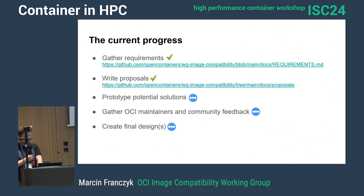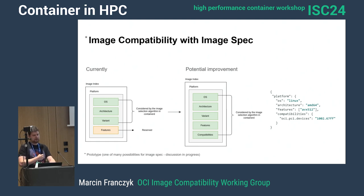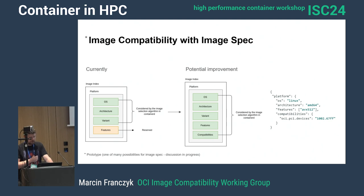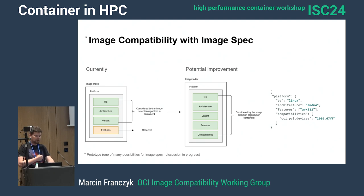The working group has two main paths. The first is compatibility with the image spec — we want to extend the image spec with new fields. Currently, image selection in containerd uses platform OS, platform architecture, and variant fields. There's also a platform features field that has been reserved for some time. We could enable platform features and add one more field, platform compatibilities, which would provide more granular image selection and allow you to embed compatibility metadata for container images.